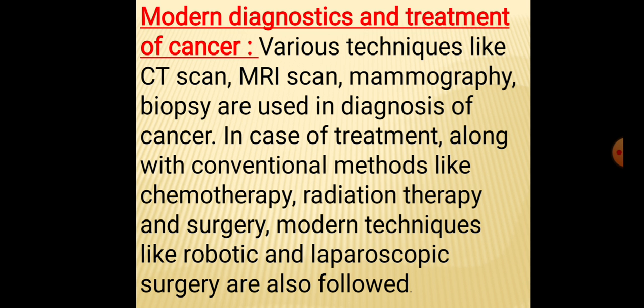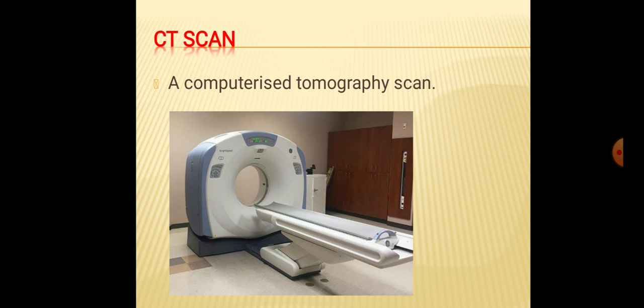CT Scan: A computerized tomography scan uses a computer and rotating x-ray machines to create cross-sectional images of the body. These images provide more detailed information than x-ray images. They can show the soft tissues, blood vessels and bones in various parts of the body.